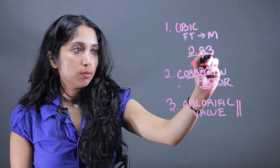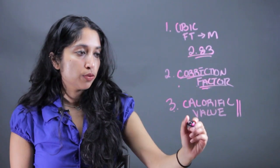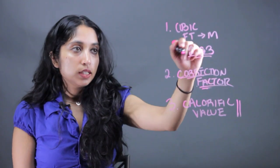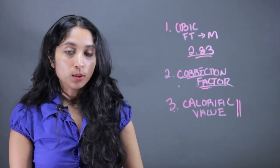So you just take all these, multiply it by 2.83, the correction factor, calorific value, that'll take you from cubic feet to kilowatt hours.